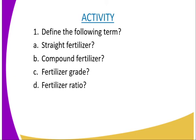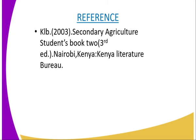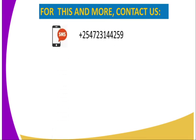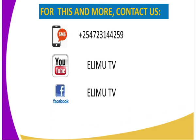We have come to the end of today's lesson, but I am going to leave some questions with you. Number one: define the following terms — a straight fertilizer, compound fertilizer, fertilizer grade, and fertilizer ratio. For reference, you can refer to the Secondary Agriculture KLB Student Book Two. For more information or clarification, you can reach us through SMS using the number displayed, on YouTube at Elim TV, on Facebook at Elim TV, or on Twitter at Elim underscore KE. Thank you for watching and for joining me in my lesson.